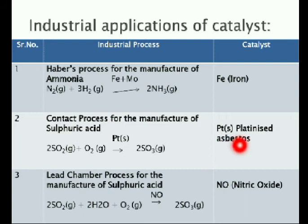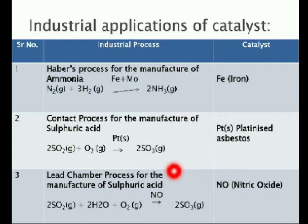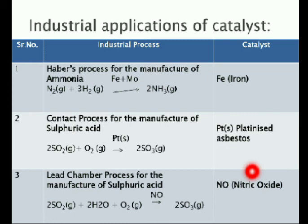Third: lead chamber process for the manufacture of sulfuric acid. Sulfur dioxide in the presence of water combines with oxygen in the presence of nitric oxide as the catalyst, resulting in the formation of sulfur trioxide, which is further converted to sulfuric acid. So in the lead chamber process, nitric oxide is used as the catalyst. Both processes manufacture sulfuric acid; you have to remember the name of the catalyst for each process.